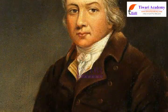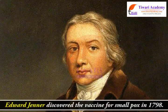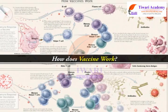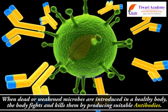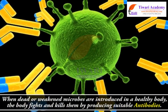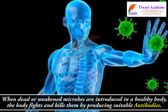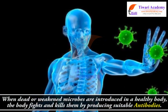Edward Jenner discovered the vaccine for smallpox in 1798. When dead or weakened microbes are introduced in a healthy body, the body fights and kills them by producing suitable antibodies.